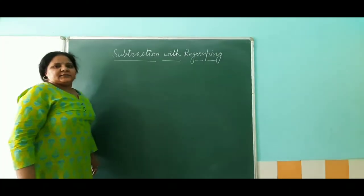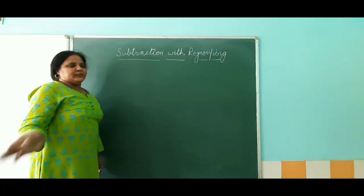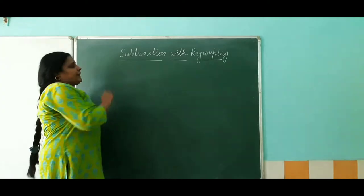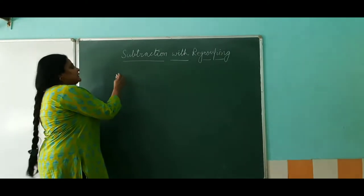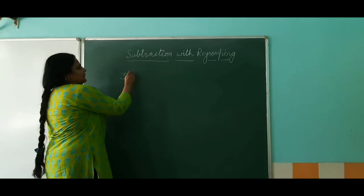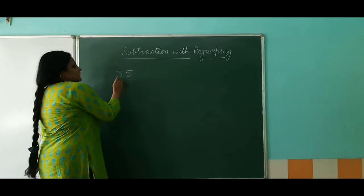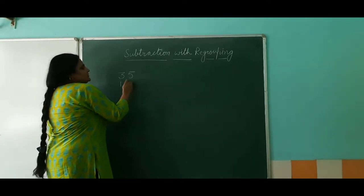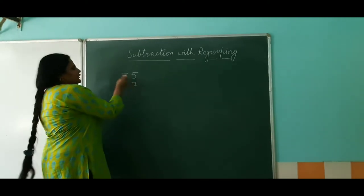So when we subtract, we have to give something to others. But what happens when there are numbers like if we have to subtract, suppose, 17 out of 35?